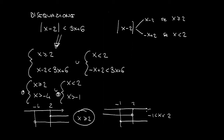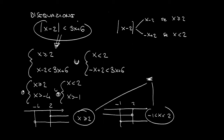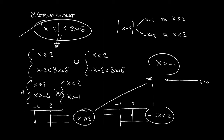Unendo queste due informazioni, perché l'insieme delle soluzioni dei due sistemi deve essere unita, andiamo a trovare la soluzione definitiva della nostra disequazione contenente il modulo, che sarà x maggiore di meno 1; ovvero, tradotto con il linguaggio della retta orientata, x appartenente all'intervallo che va da meno 1 a più infinito.